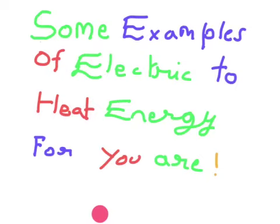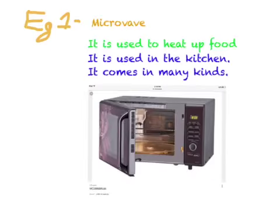Some examples of electric to heat energy are there. The first example is a microwave. It is used to heat up food. It is used in the kitchen. It comes in many kinds and in many colors, so you can see it because it is at your home also.